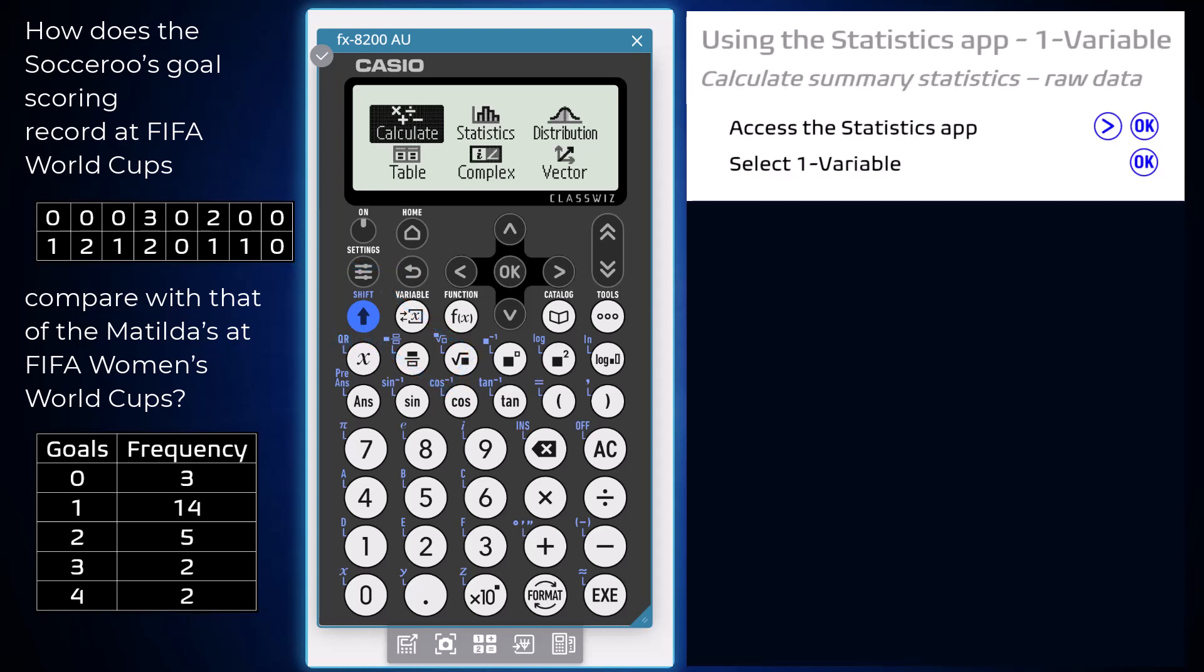From the home screen, arrow across to the statistics app and press OK. Choose to work with one variable data by pressing OK.